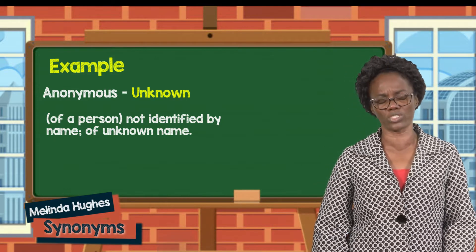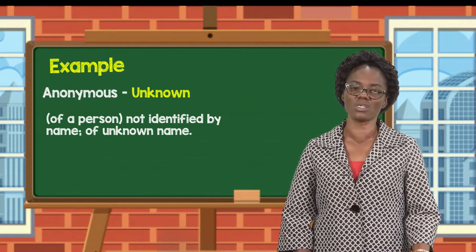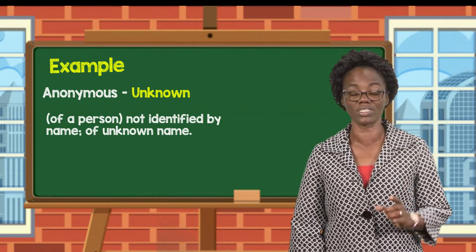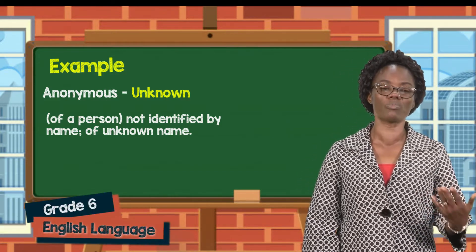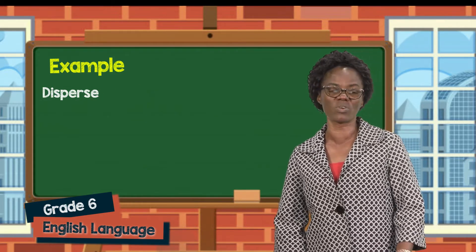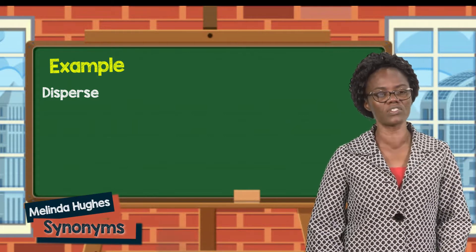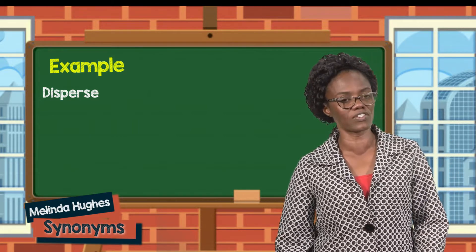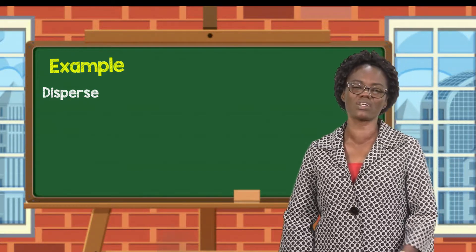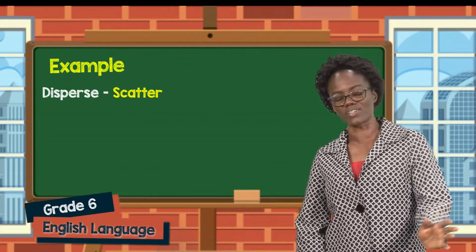Sometimes we do poetry in school, and at the end of the poem, instead of seeing the name of the poet, you see the word anonymous. That's simply because the author or the poet is unknown. Disperse — this is one of the words we use in science, especially when we look at seeds and how we get new plants. This is one of the methods by which we get new plants when seeds are dispersed — by dispersal, or when they are scattered.